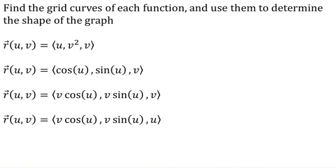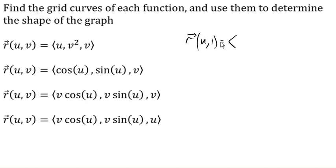Last one. Notice again we have a cosine-sine pair, suggesting rotation. Let's start by letting v equal a constant. If v equals 1, we get (cos u, sin u, u). This is very different from the last one — instead of a circle, as we rotate in x and y, we're also increasing with z. You might remember that is a helix.